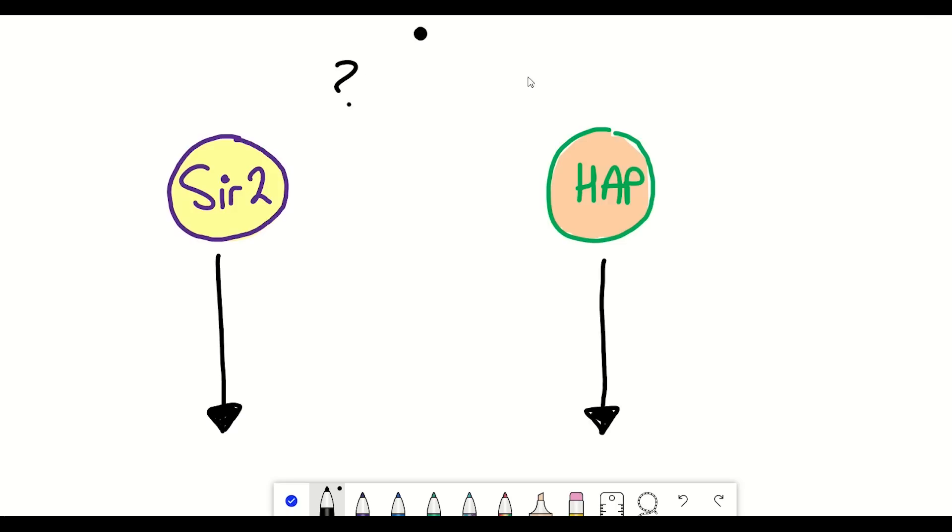So like in the game, the question is raised: what controls which path is taken and can you manipulate yeast such that they prolong this decision and live longer?